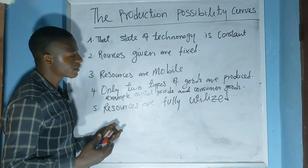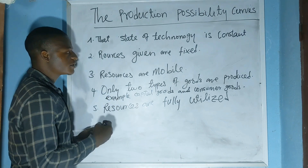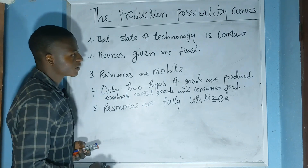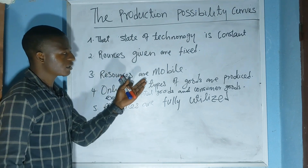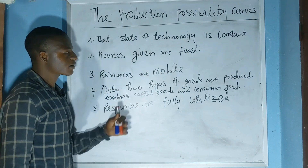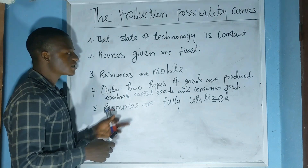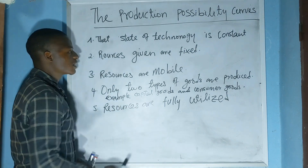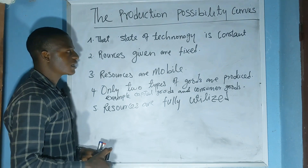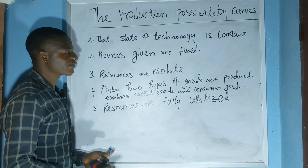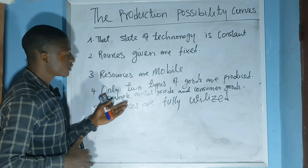The third assumption is that resources given are mobile — this means that resources can be shifted from one industry to another within the same economy. For example, if an industry that produces capital goods has a surplus, that surplus can be shifted to the industry that produces consumer goods and has a low supply level.